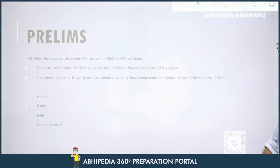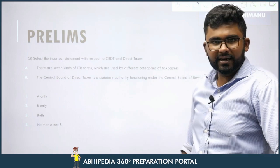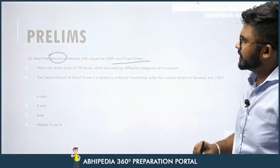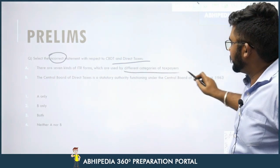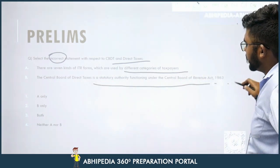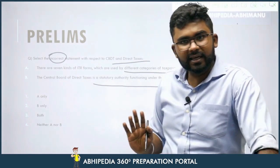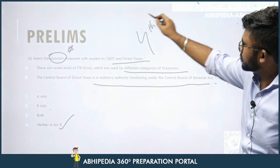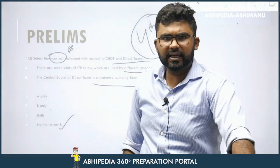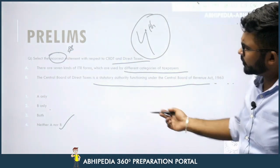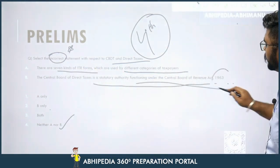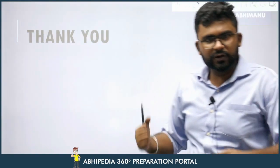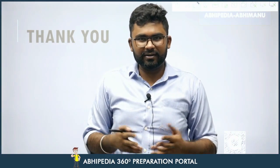You can pause the video and attempt this question on your own. The question asks: 'Select the incorrect statement with respect to CBDT and direct taxes.' Statement one: There are seven kinds of ITR forms used by different categories of taxpayers. Statement two: The CBDT is a statutory authority functioning under the Central Board of Revenue Act, 1963. Both statements are correct, so since the question asks for the incorrect statement, the answer is option four — 'None of the above.' This is a moderate to difficult question because much of the information is hidden and not commonly known. I hope this video was informative. My name is Rohit Garcha, this is 'To The Point' and you are watching Abhimanyu IES.